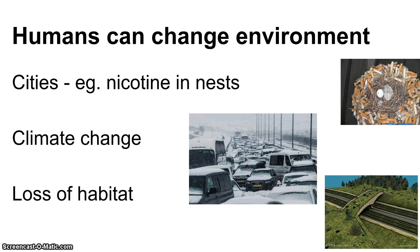Humans are also affecting evolution by changing the environment. Humans have not been around for that long, but we're already causing changes. For example, nicotine in bird nests: nicotine repels bugs and acts as a pesticide. As a behavioral adaptation, some birds are now building their nests with cigarette butts because the nicotine keeps bugs away from their eggs, giving their offspring an advantage.